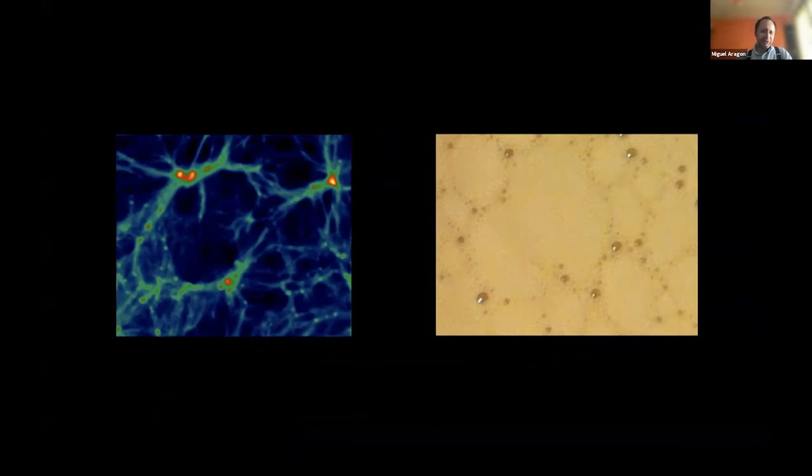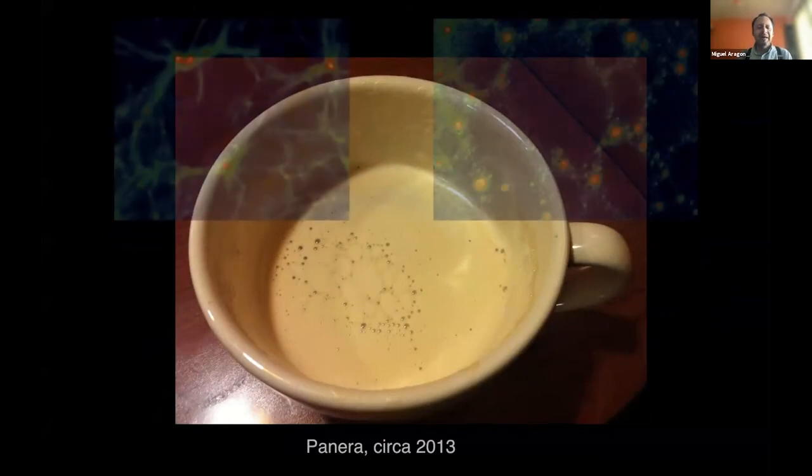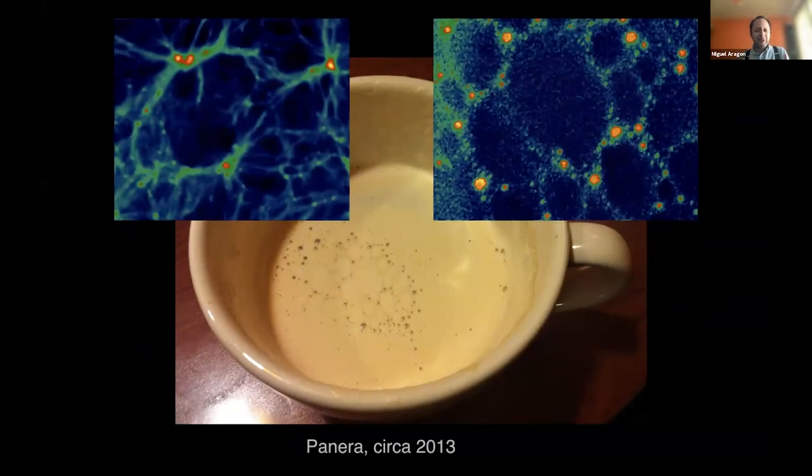On the right, we have the cosmic web. It's millions of light years in size. But on the left, we have the foam inside a coffee cup. This is something that we saw a few years ago when we were having a coffee. Now, how is it possible that we see the same patterns in a coffee cup and in the largest objects in the universe?